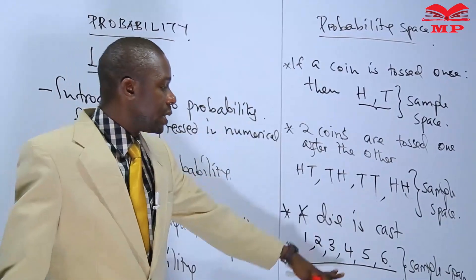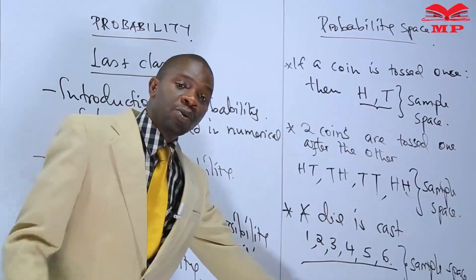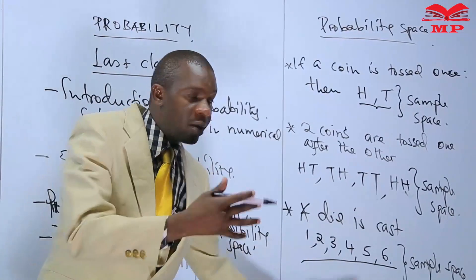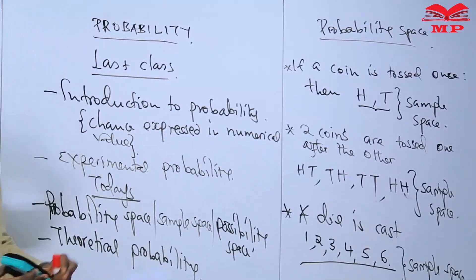So when we are talking about probability space, basically, listing all the total possible outcomes that you are likely to get when an event takes place — that is what you are doing when you talk about probability space.